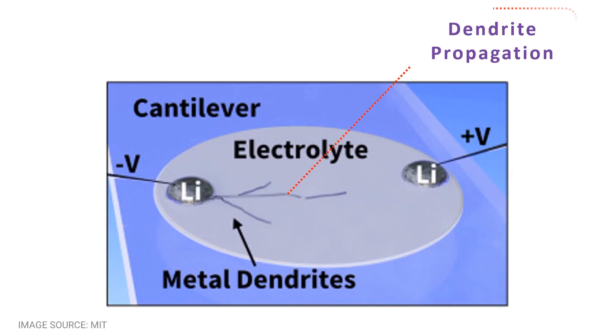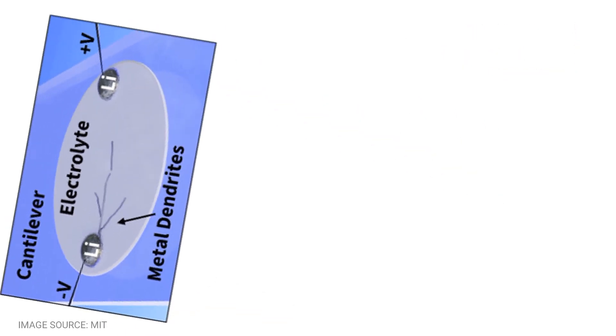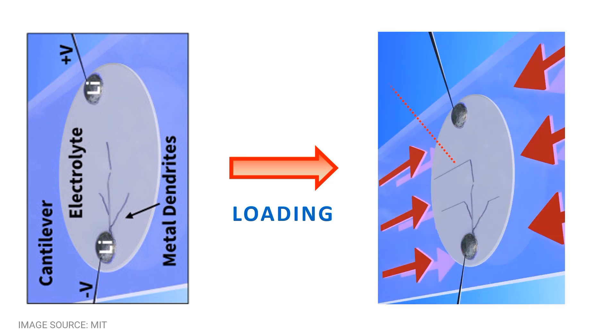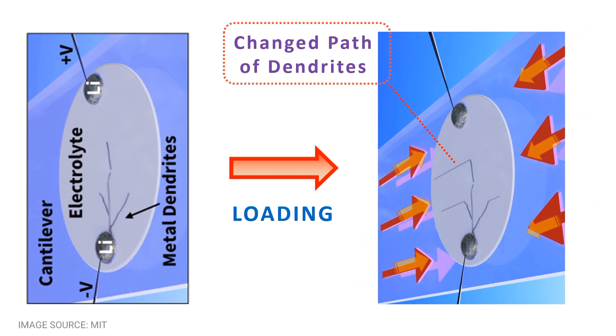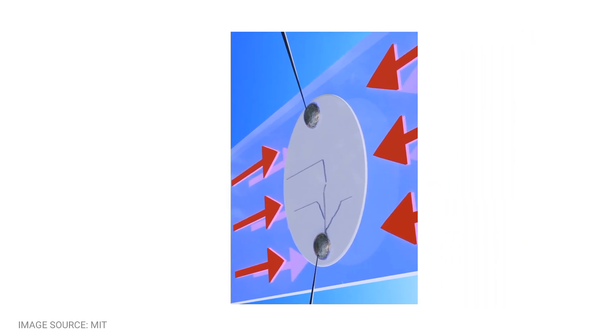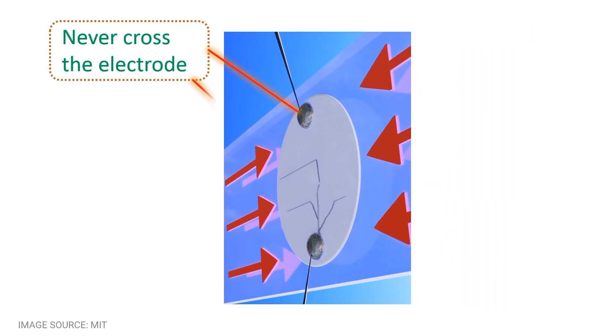While previously, some researchers thought that the reason behind dendrite formation was a purely electrochemical process, rather than a mechanical one, the team's experiments demonstrated that the mechanical stresses were the real cause of the problem. Even more surprising was the outcome of the follow-up experiment. The team demonstrated that they could direct the growth of the dendrites by simply applying and releasing pressure, causing the dendrites to grow in a zigzag pattern in perfect alignment with the direction of the force. What it means is that mechanical stresses applied to the solid electrolyte can be used to direct the dendrites to remain parallel to the two electrodes, preventing these dendrites from ever crossing them, thus rendering them harmless.